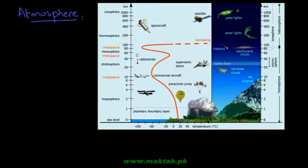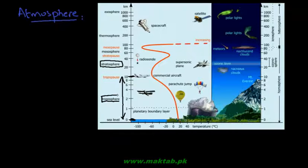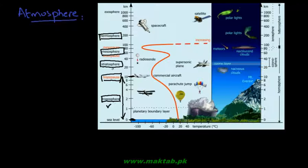Let us first look at the atmosphere. Atmosphere exists in the form of several layers. The bottom-most layer is called the troposphere, which extends from zero kilometers - بالکل surface of the world سے - up till 10 kilometers. Then the next major layer is the stratosphere. The region between troposphere and stratosphere is called the tropopause. After stratosphere comes the mesosphere, and then the thermosphere. So there are four major layers: troposphere, stratosphere, mesosphere, and thermosphere.